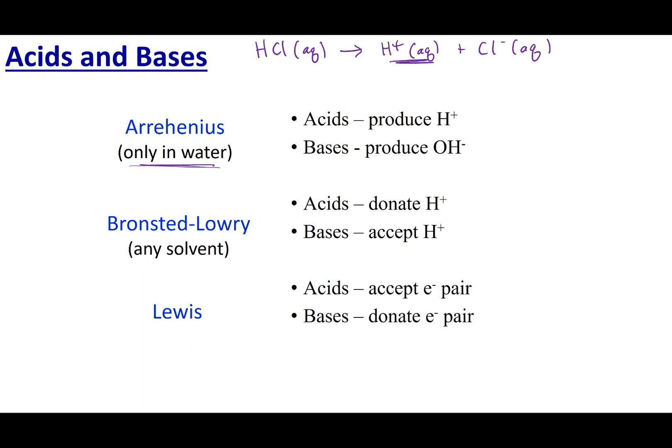On the other hand, bases are going to be things that produce OH-, so if I had something like NaOH and I were to dissolve it, it makes Na+ ions, and it also makes OH- ions, and because it increases that OH- concentration, it's considered an Arrhenius base.